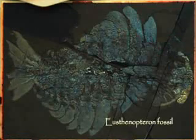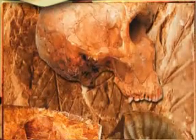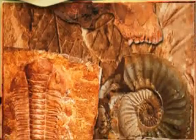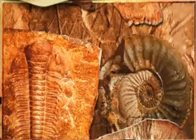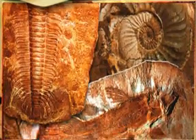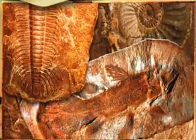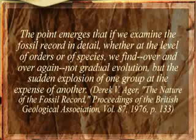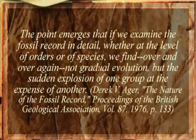No fossils of half-fish, semi-amphibians, half-dinosaur, half-birds, or half-ape, half-humans of the kind sought by evolutionists have ever been found. The evolutionist fossil expert Derek W. Ager admits as such: 'The point emerges that if we examine the fossil record in detail, whether at the level of orders or of species, we find, over and over again, not gradual evolution, but the sudden explosion of one group at the expense of another.'